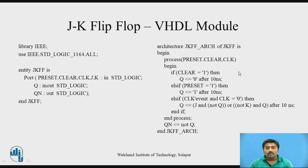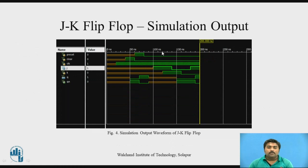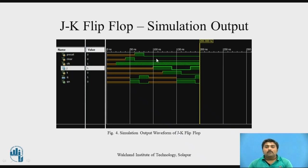You can verify with simulation. When clear is set to 1, the output becomes 0 after 10 nanoseconds. When clear is set to 0 and preset is set to 1, the output becomes 1 after 10 nanoseconds. Q-bar is the inverse of Q throughout. This is how you verify the VHDL module for the JK flip-flop using simulation.